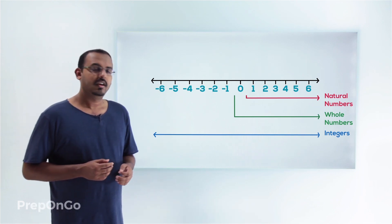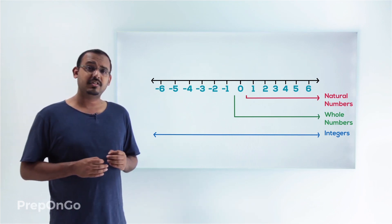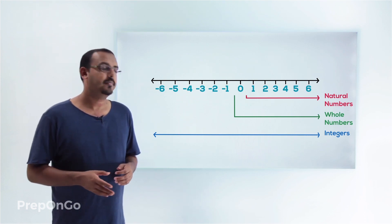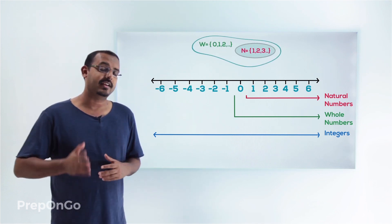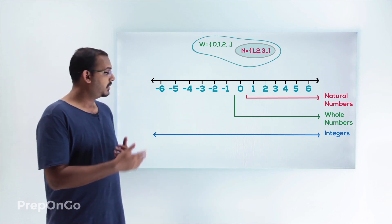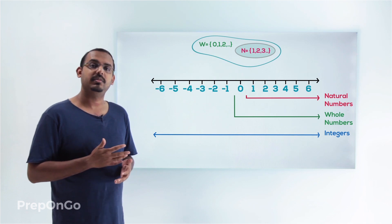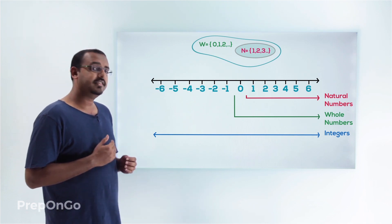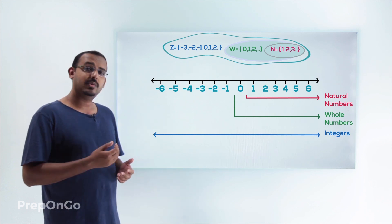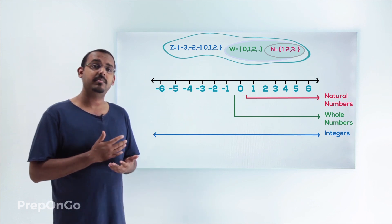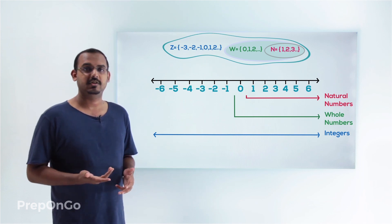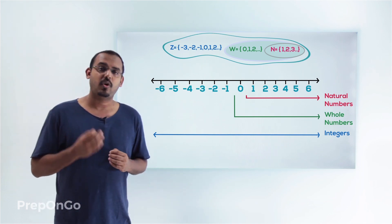Notice something interesting here. We can see that all the natural numbers are included in the whole numbers. In other words, the set of natural numbers is actually a subset of the set of whole numbers, because all the natural numbers are contained in the whole numbers. Also, all the whole numbers are included in the integers, so the set of whole numbers is actually a subset of integers.